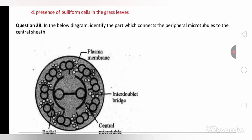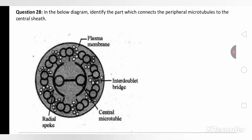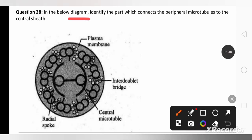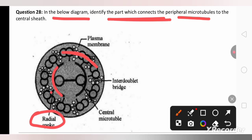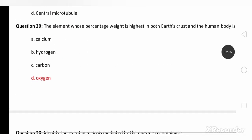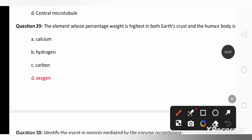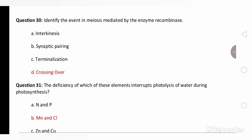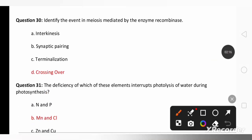In the below diagram identify the part which connects the peripheral microtubules to the central sheath. They are the radial spokes that connect to the central sheath. The element whose percentage weight is highest in both earth crust as well as human body is oxygen.